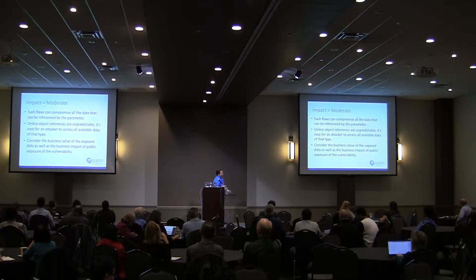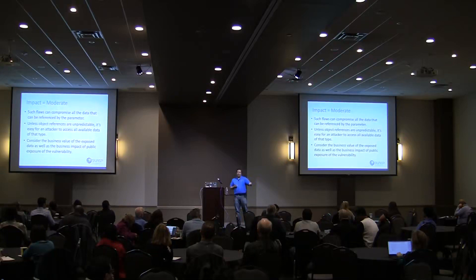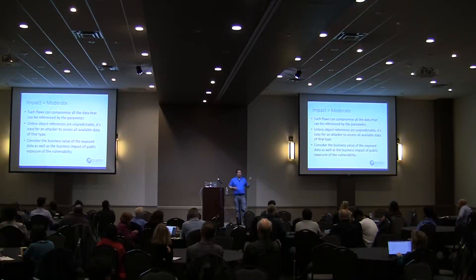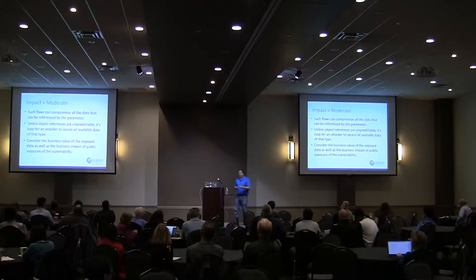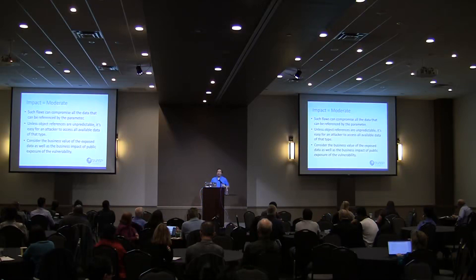For example, if you have a URL parameter like 'file=' and some web page value, and the application loads that content into the page, an attacker can say: instead of that file, I want to go to /etc/passwd and grab its contents. Now I've exposed all the users on that system. Based on what this parameter is exposing, we can get additional data from the system. Unless object references are unpredictable — meaning a random value — it's pretty easy for an attacker to access all this data.